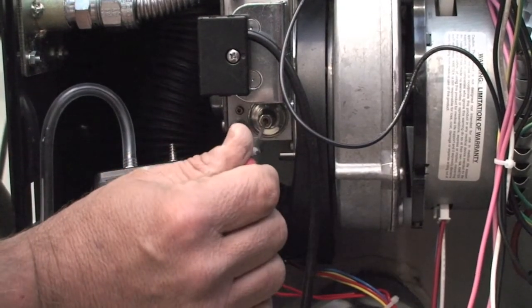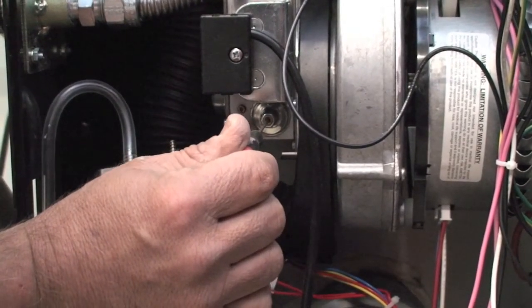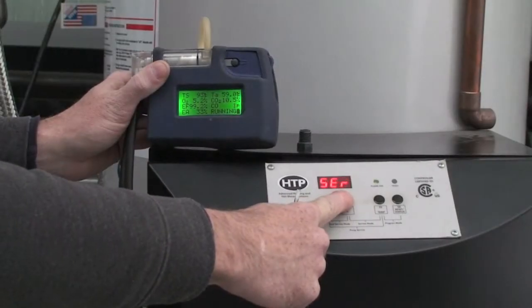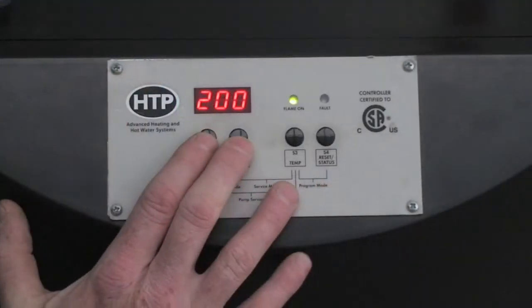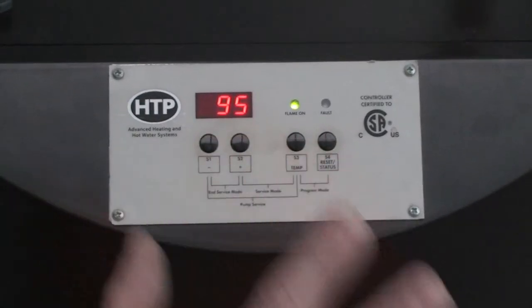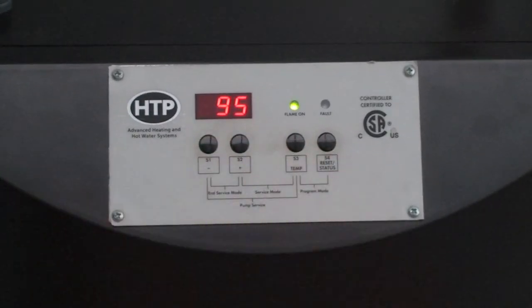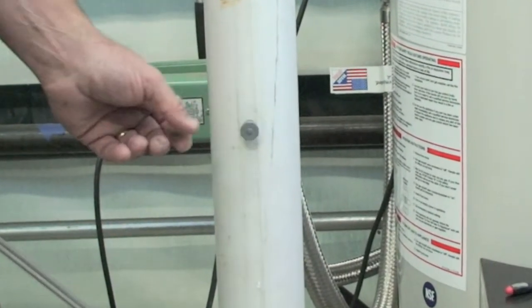After low fire adjustments have been performed, raise fan speed into high and verify high fire combustion is still within range. After testing has been completed, return unit to normal operation by pressing S1 and S2 simultaneously. And be sure to plug or seal test port.